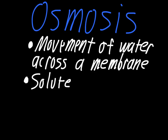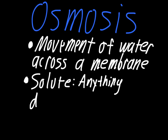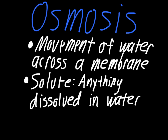Solute is anything dissolved in water. Typically for our purposes, these will be things like sugar and salt — things that are commonly dissolved in water around a cell. An easy way to think of osmosis is to think of what would happen to a cell if you put it in pure water, which would have no solute, versus what would happen if you put a cell in salt water. Remember these two things: osmosis is the movement of water across a membrane, and solute is anything dissolved in water.